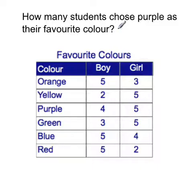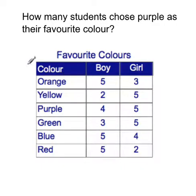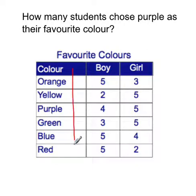So how many students chose purple as their favourite colour? That's the question. Let's look at this graph — we need to interpret this graph. As you can see, down this column here we've got all the different types of colours: we've got orange, yellow, purple, green, blue, and red.